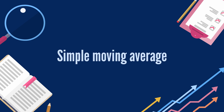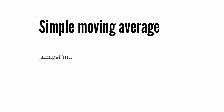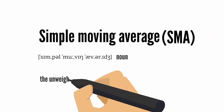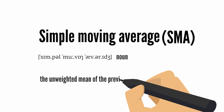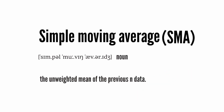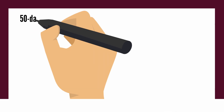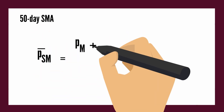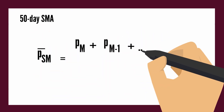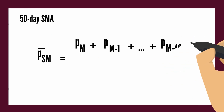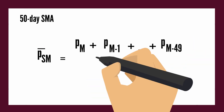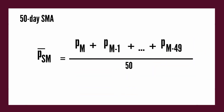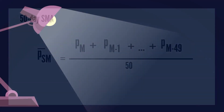A simple moving average, SMA, is the unweighted mean of the previous N data points. For example, to get a 50-day simple moving average, you add up all the price closings over the last 50 days, and then divide by 50.